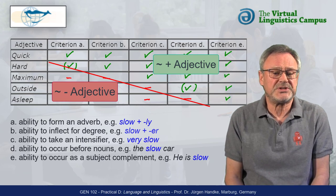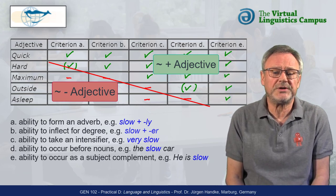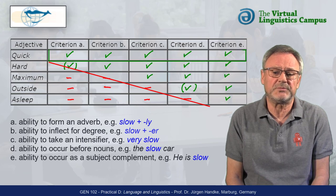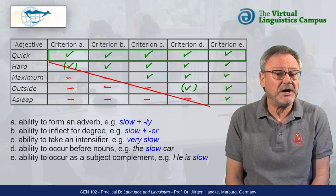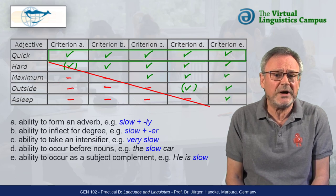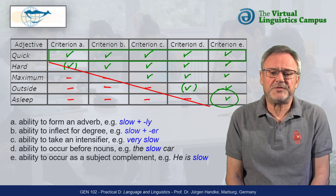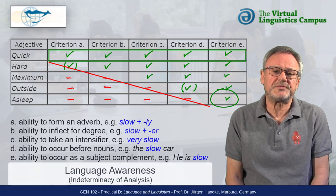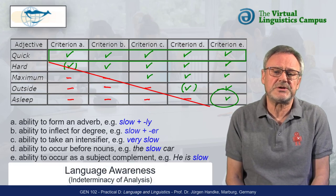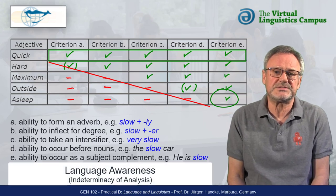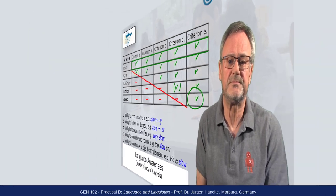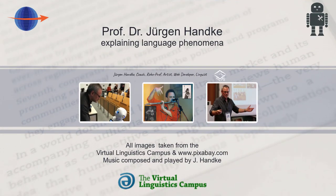Some adjectives satisfy all criteria — for example, quick. Others only one — for example, asleep. This phenomenon is often referred to as indeterminacy of analysis.